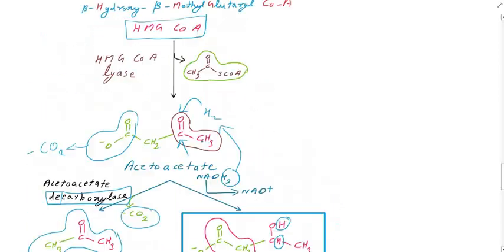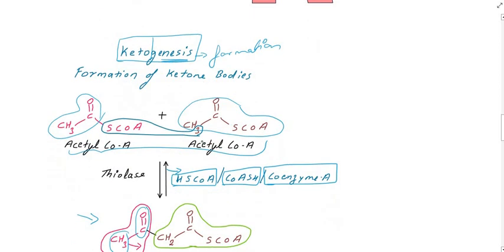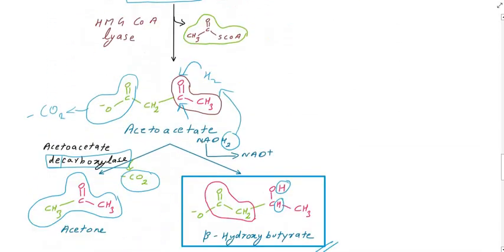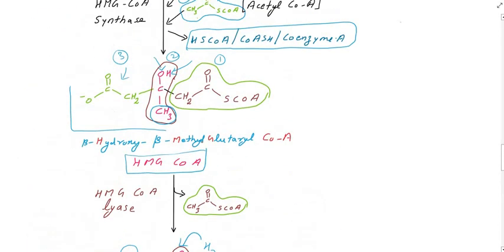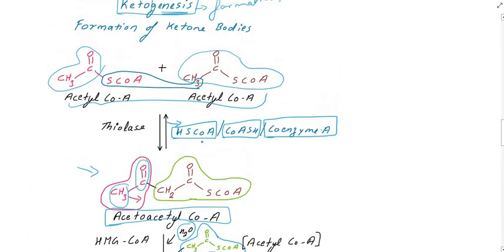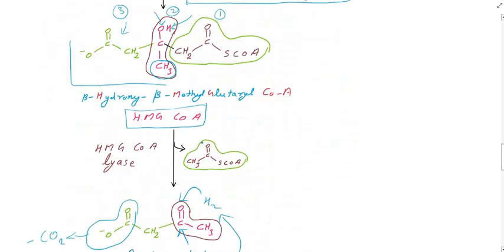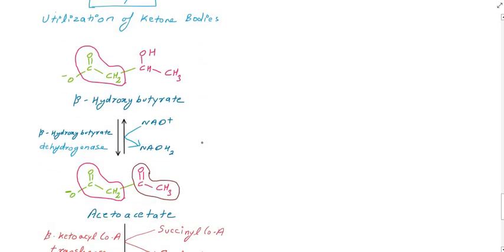Ketogenesis results in the formation of ketone bodies — the final products are acetoacetate and beta-hydroxy butyrate. The opposite process is ketolysis, which is the breakdown of these ketone bodies. We will now look at ketolysis.